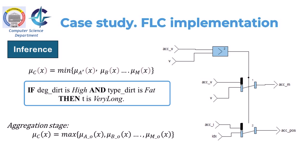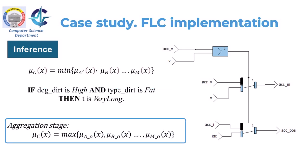For example, the first rule states: if degree of dirtiness is high AND type of dirtiness is fat, then the time will be very long. The AND operator is realized by the min operation in SCADE. An if-then control statement determines the membership function with the minimum value. Since multiple rules can produce the same output fuzzy set, an aggregation stage determines the membership function mu(x) of the output fuzzy set, which will be used in defuzzification.